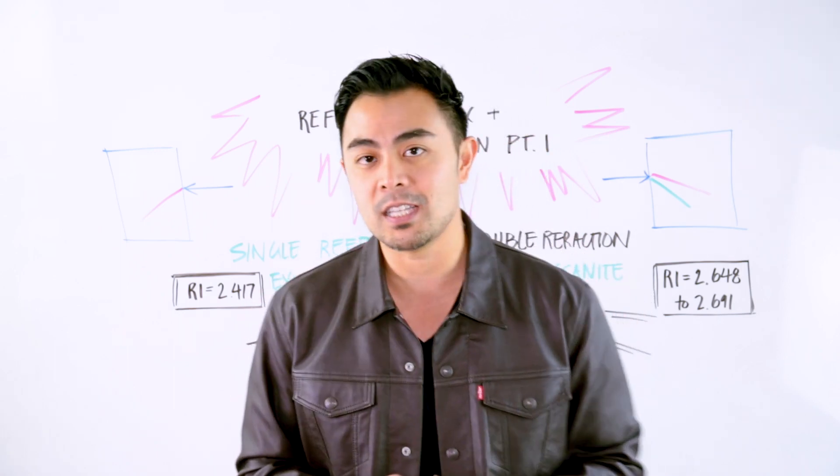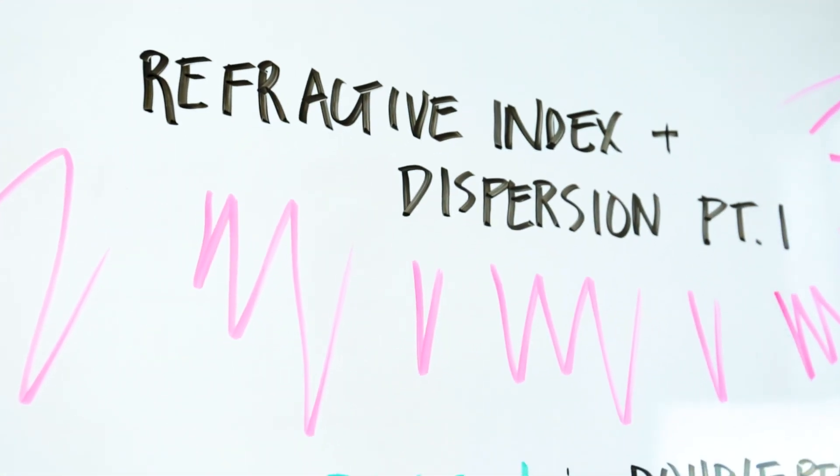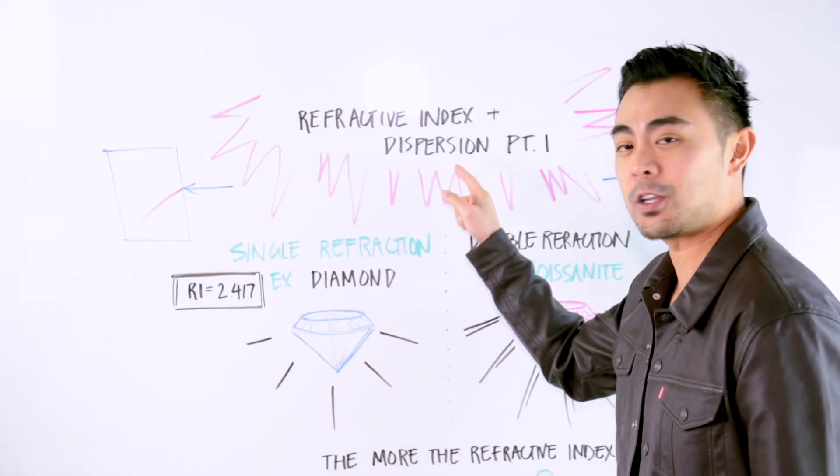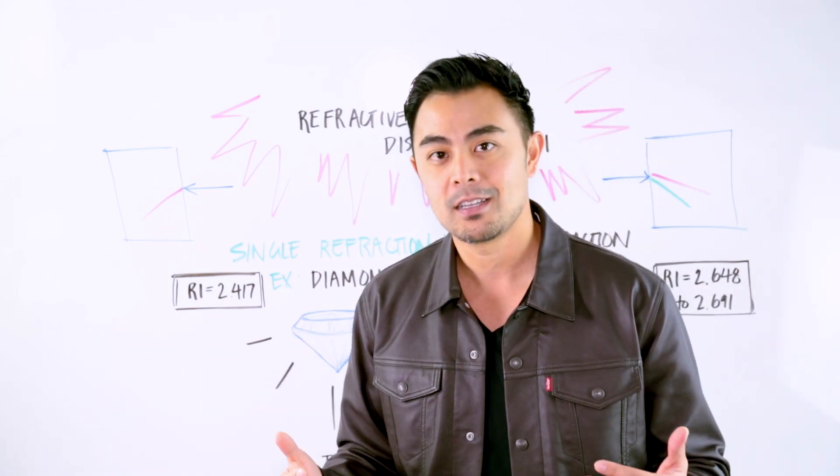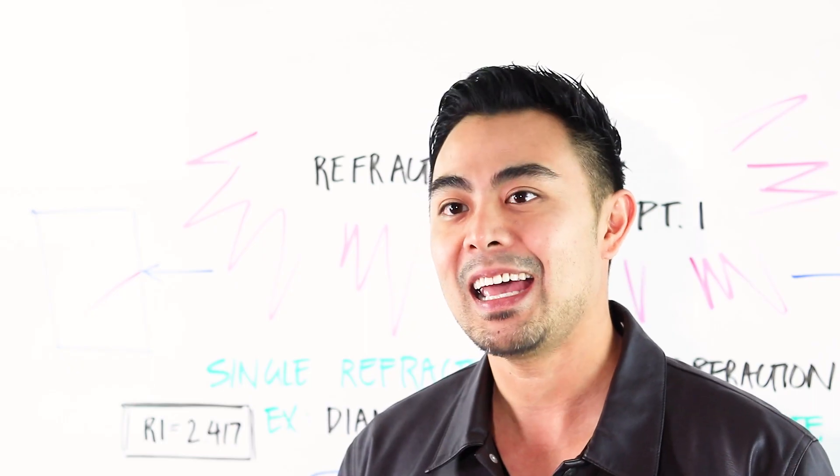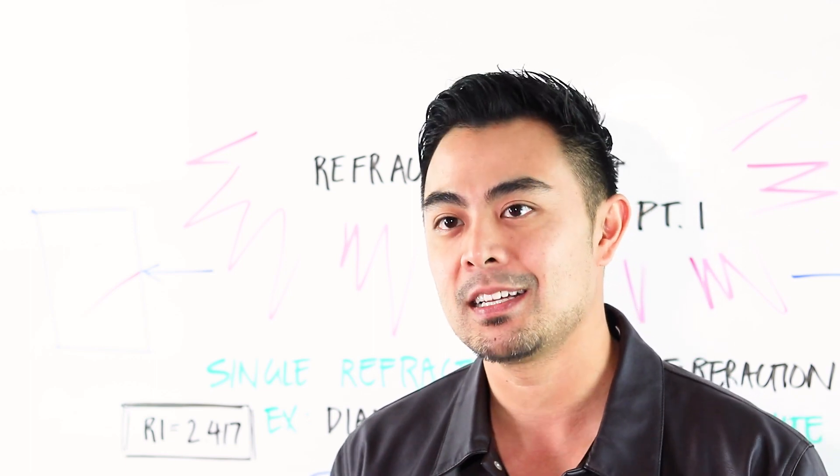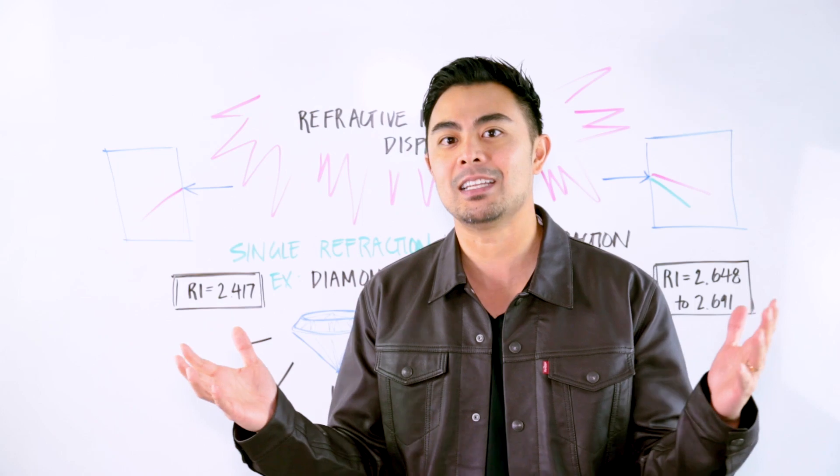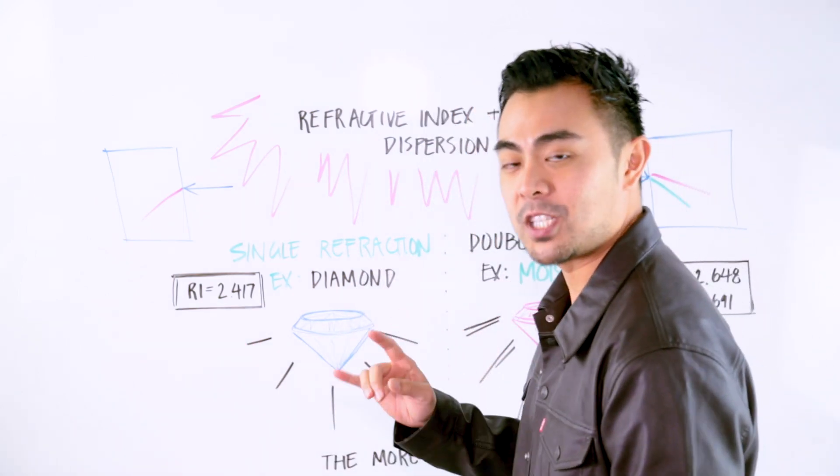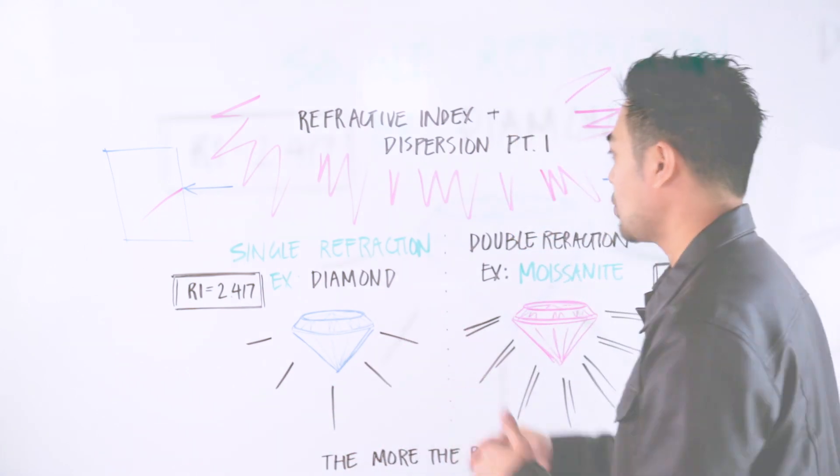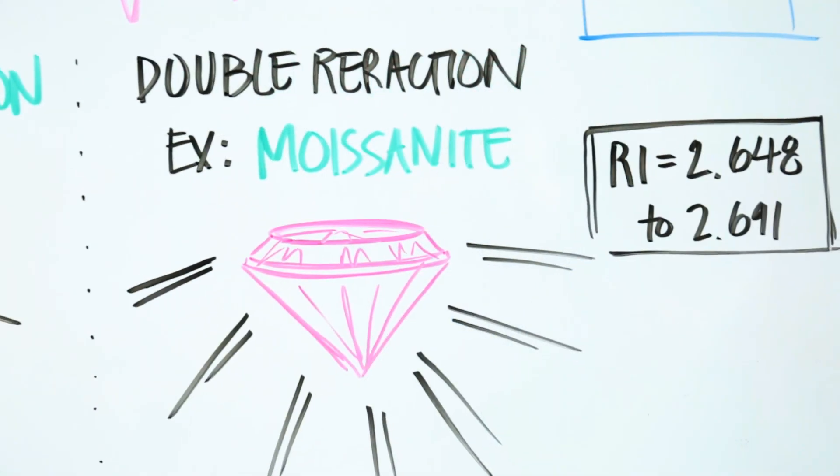Now if you want to understand brilliance, then you have to understand the refractive index. I will break down dispersion next week which basically goes over fire. But the refractive index, all that basically means is that when light enters into a gemstone, how much does that bend the light? Now what does that even mean like bending the light? In other words, there are two types of gemstones that will bend light. One will be a single refraction, the second will be a double refraction.